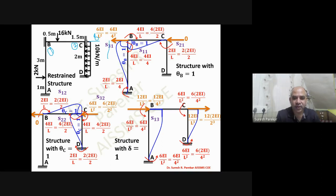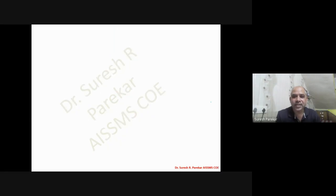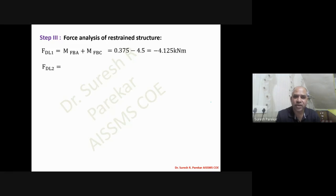The stiffness elements S13, S23, S31, S32, and S33 are all identified. S31 and S32 are negative (reactions towards the left). With all stiffnesses assembled for unit displacements at positions 1, 2, and 3, the 3×3 stiffness matrix is complete.